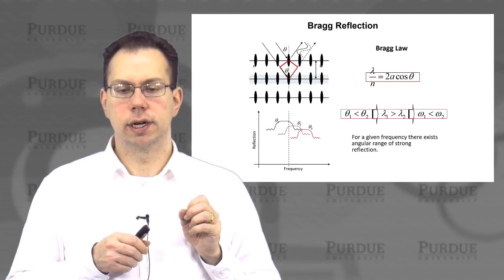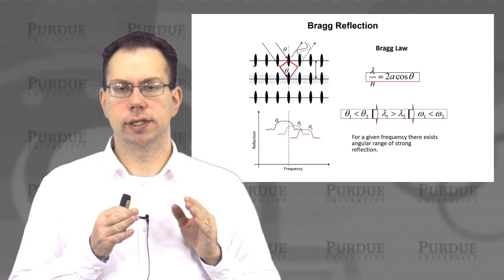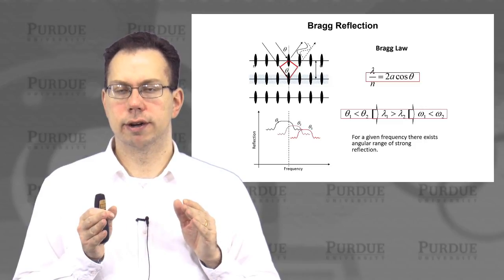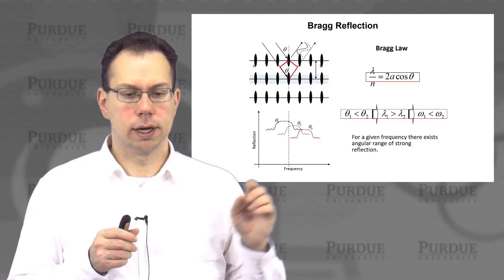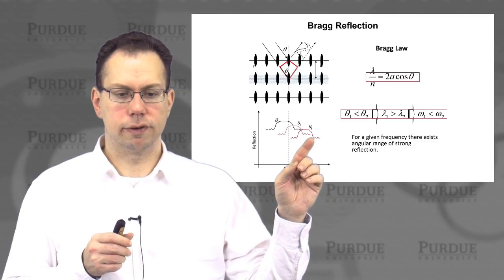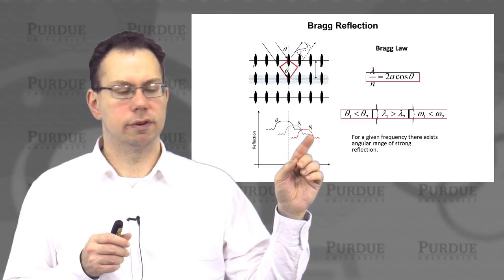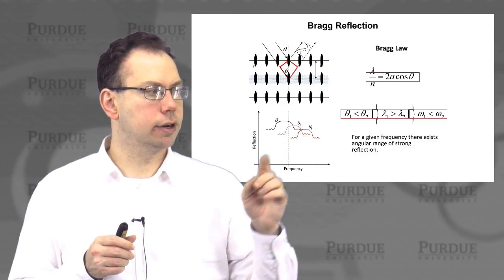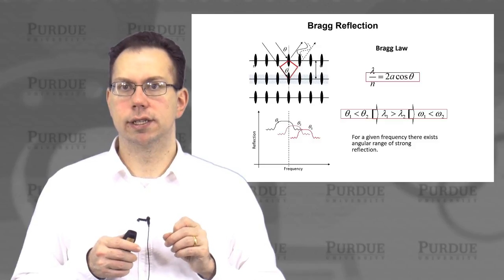And so that means that over a given frequency range, there's usually a range of angles that can be strongly reflected by periodic media. And then this graph here is just showing an example of reflection as a function of frequency for various angles. And so of course you can see that different angles have different reflection frequency ranges.